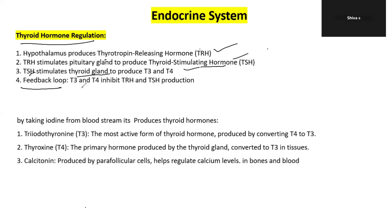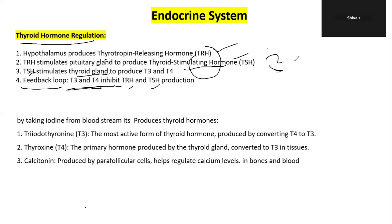The feedback loop contains T3 and T4. When T3 and T4 levels are sufficient, they inhibit TRH and TSH production automatically, completing the negative feedback cycle.